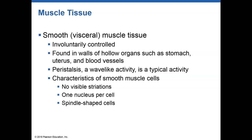Smooth muscle, on the other hand, is great at regeneration — it's our one regenerative muscle type. It is also involuntary, meaning we don't control it. We find smooth muscle throughout our entire body — it lines the walls of our internal organs like our stomach and intestines, and it functions in movement of material throughout the body. Smooth muscle is called smooth because there are no striations, since the proteins don't run in the same directions as in cardiac and skeletal muscle.